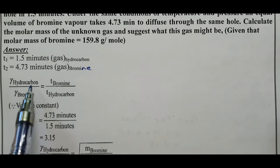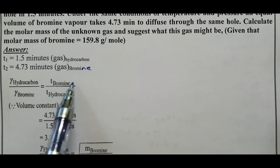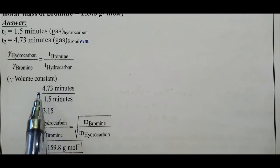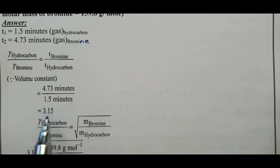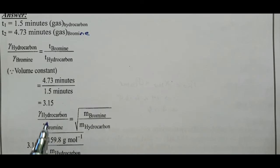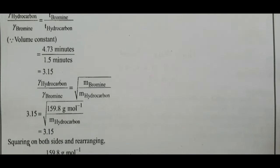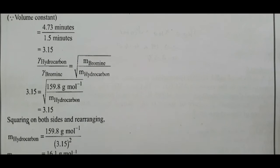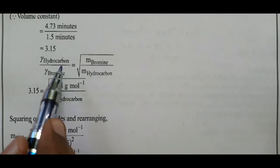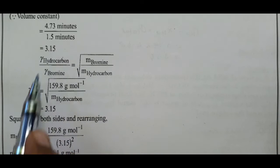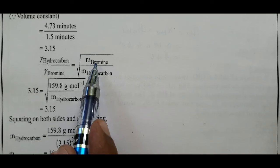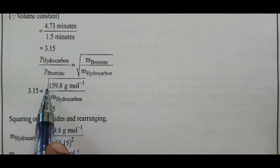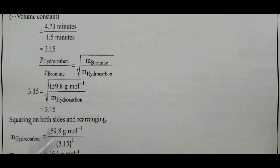Rate of diffusion of hydrocarbon / rate of diffusion of bromine is inversely proportional to time. Since volume is constant: rate ratio = time of bromine / time of hydrocarbon = 4.73 / 1.5 = 3.15. By Graham's law: this ratio equals √(M_bromine / M_hydrocarbon). √(159.8 / M_hydrocarbon) = 3.15.